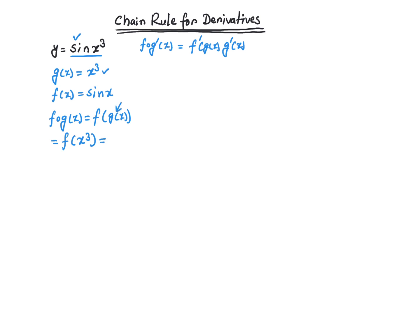What does f do to its input? You have to think about x cubed as input going into f. All f does to its input is get the sine of it. So in this case, it's just going to take the sine of the input, which is sine of x cubed.